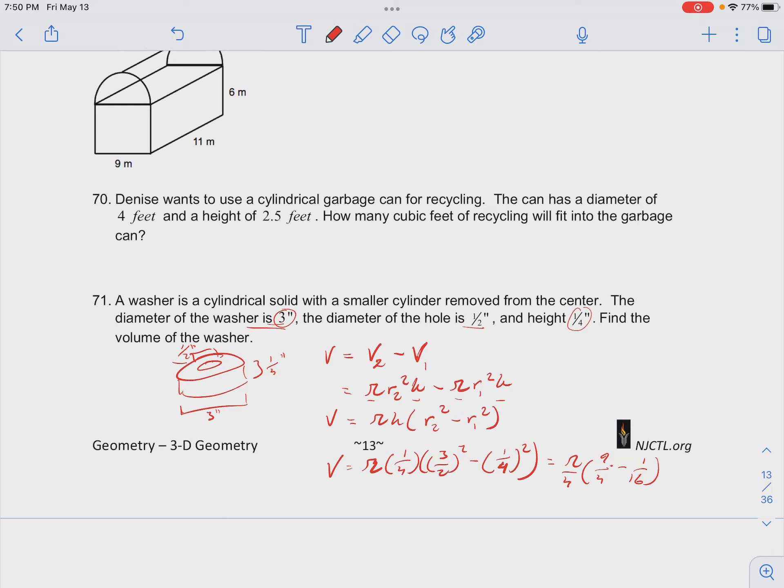Converting this 9/4 to something over 16, that'll be multiplying by 4/4. So we have that the volume is equal to π/4 times 36 minus 1 over 16, that's just one fraction.